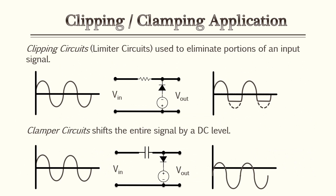Another diode use would be clipping and clamping circuits. Clipping circuits, also known as limiter circuits, are used to eliminate portions of an input signal. In the illustration, a sine wave goes through a clipping circuit and comes out with the negative portion clipped off. You can change up the circuit in various ways to clip or limit different parts of the signal.